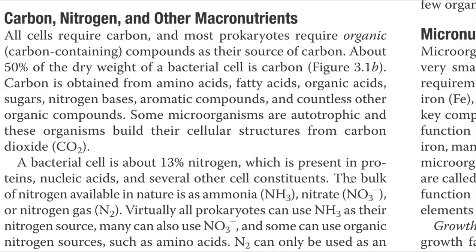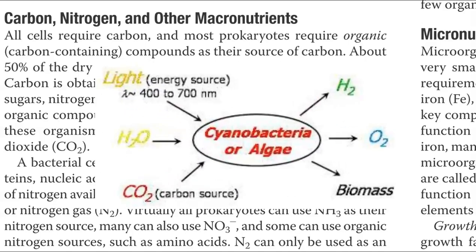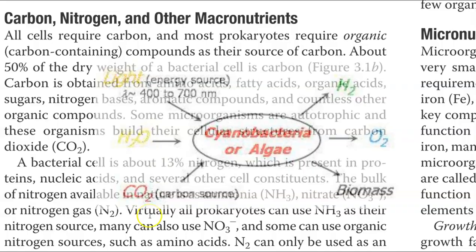Carbon in its organic form can be obtained from amino acids, fatty acids, organic acids, sugars, nitrogen bases, aromatic compounds, and numerous other organic compounds. For autotrophic organisms like cyanobacteria, carbon is obtained mainly from the atmosphere — the highly oxidized form of carbon, that is atmospheric carbon dioxide, is fixed into cell carbon by these autotrophic organisms.